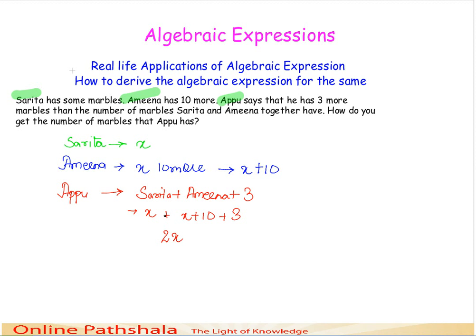The like terms — x and x — can be added together since they have the same algebraic factor, giving us 2x. The constants 10 and 3 are added as simple addition. So Appu has 2x plus 13 marbles. This is how we derive an algebraic expression, and this is one real-life application of algebraic expressions.